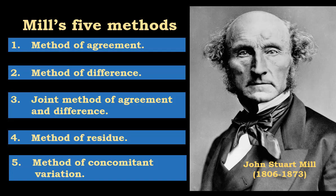Let's start with the method of agreement. In order to describe those methods, he developed five canons. The first canon belongs to the method of agreement, and it goes like this: if two or more instances of the phenomenon under investigation have only one circumstance in common, the circumstance in which alone all the instances agree is the cause or effect of the given phenomenon. In the graph we've got two instances of a phenomenon of interest. In this case, P1 is the phenomenon of interest — these are two instances in which P1 occurs.